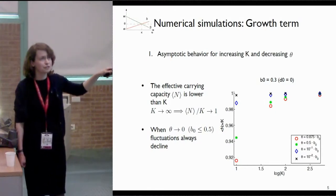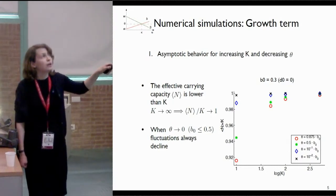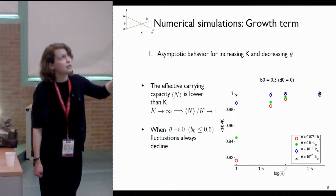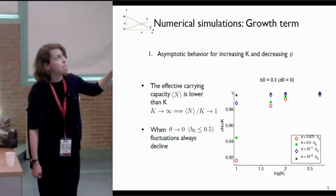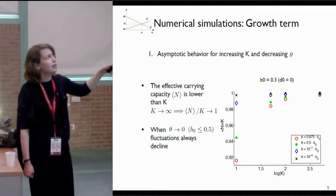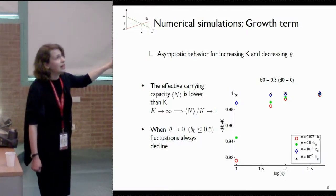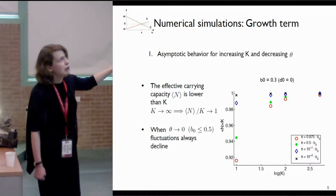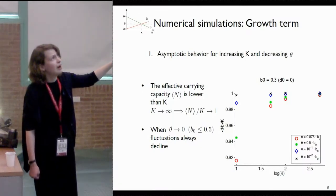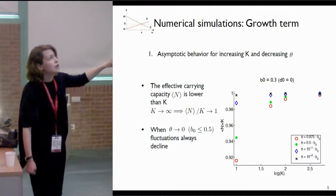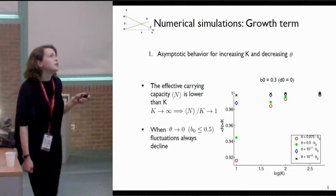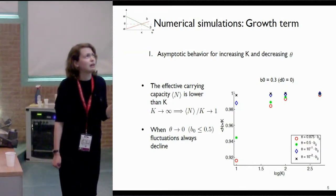What we notice is that the effective carrying capacity is lower than K; however, with the increase in K it increases. When we decrease the turnover rate, fluctuation declines. So in red we have the highest turnover rate, in green the second highest, and then blue and black. When we decrease the turnover rate, fluctuation decreases and the effective carrying capacity approaches K.